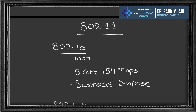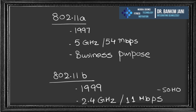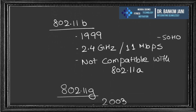The 802.11 standard is the foundation of all wireless technology. In 1997 the first standard, 802.11a, ran on 5 GHz at 54 Mbps but was for business only. In 1999 came 802.11b on 2.4 GHz at 11 Mbps for small office/home office, and it was not compatible with 802.11a.